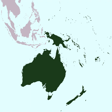Colonial languages include English in Australia, New Zealand, Hawaii, and many other territories; French in New Caledonia and French Polynesia; Japanese in the Bonin Islands; and Spanish on Easter Island.